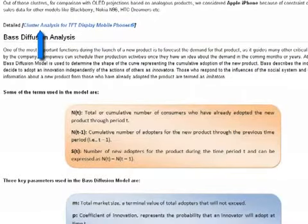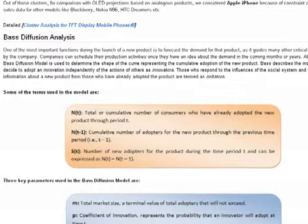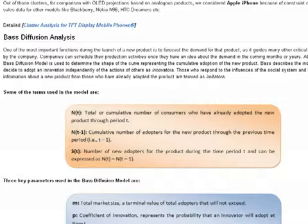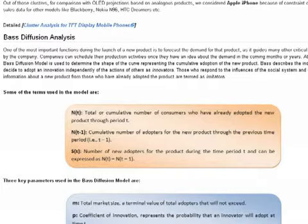This link here will provide you with the detailed information on our cluster analysis of the TFT display mobile phones. The Wikipedia definition of Bass Diffusion Model states: it is a model that describes the process of how new products get adopted as an interaction between users and potential users. It has been described as one of the most famous empirical generalizations in marketing. The model is widely used in forecasting, especially product forecasting and technology forecasting. We have made use of the Bass Diffusion Model for two different extrapolations to determine the sales data for future OLED mobiles.